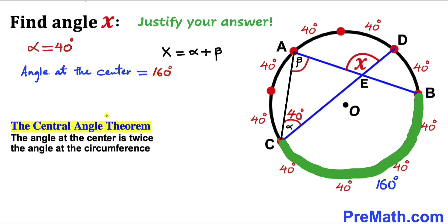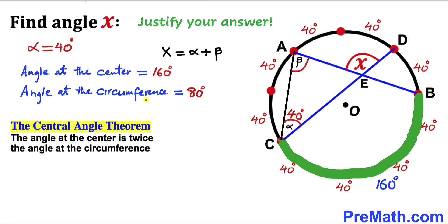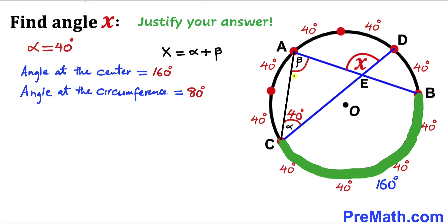According to the central angle theorem, the angle at the center is twice the angle at the circumference. So the angle at the circumference is going to be half of that, which is 80 degrees. And we know our angle at the circumference is beta, so therefore beta turns out to be 80 degrees.